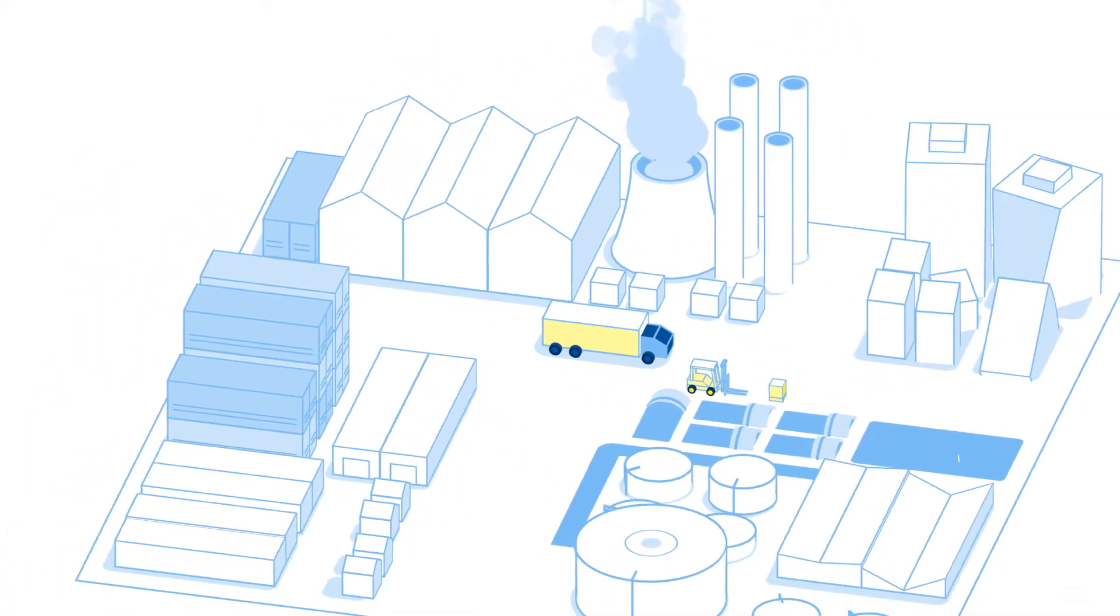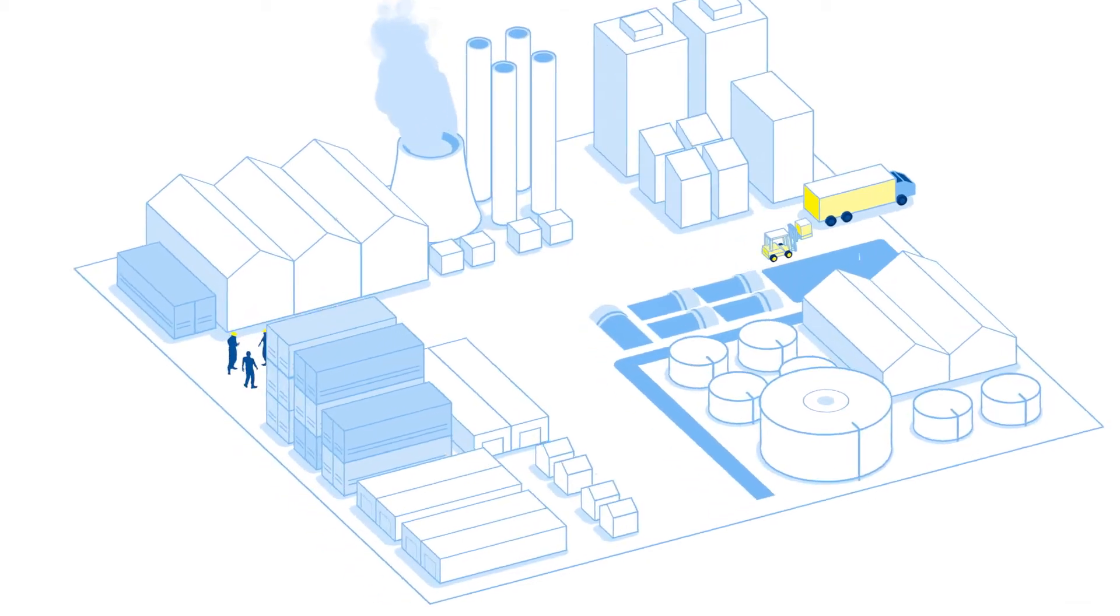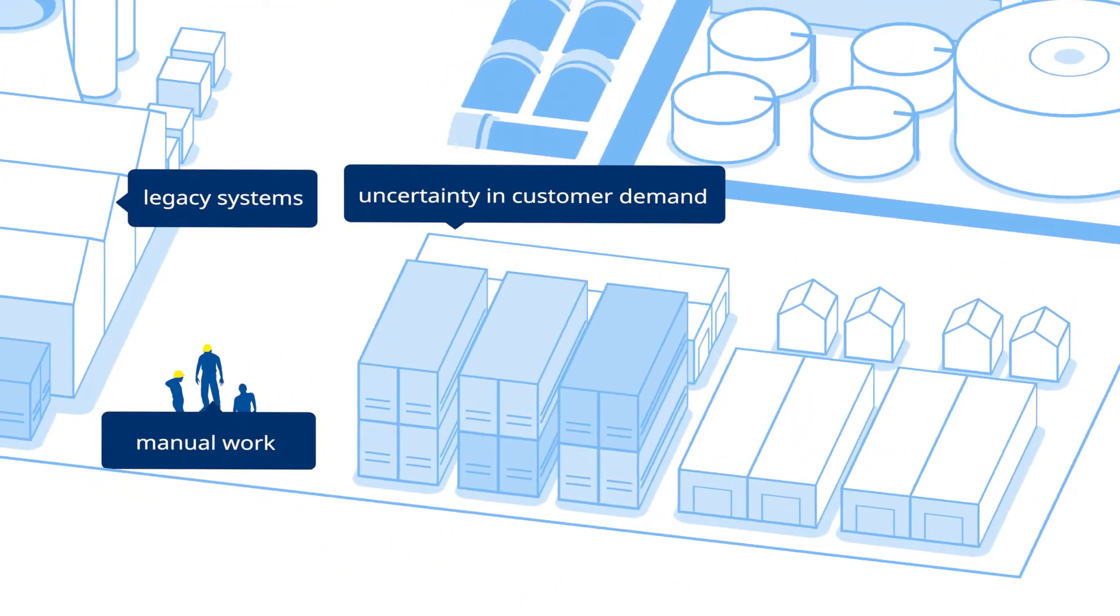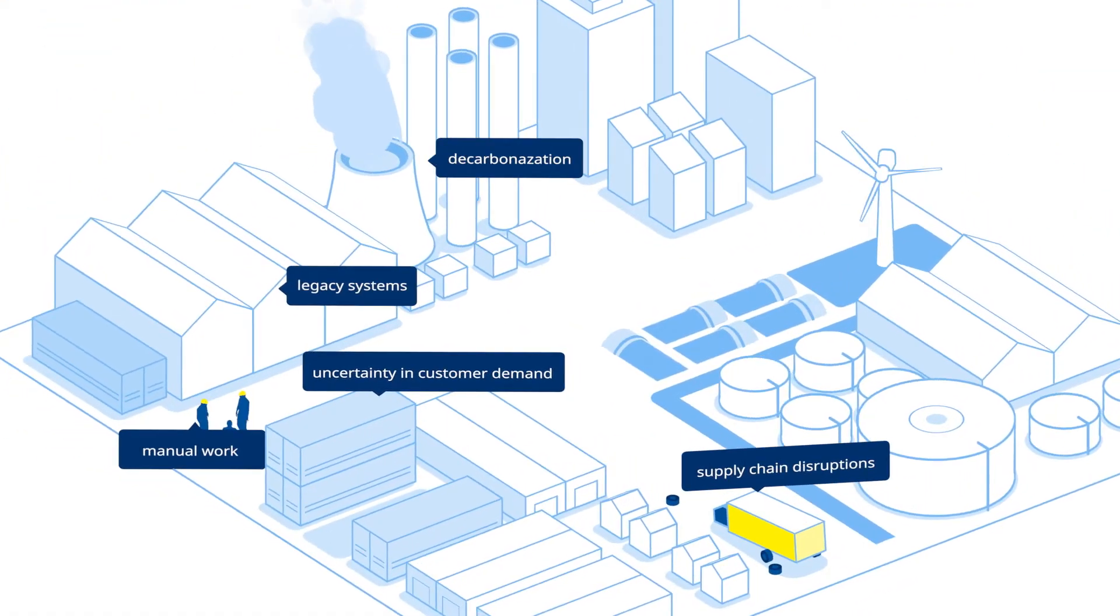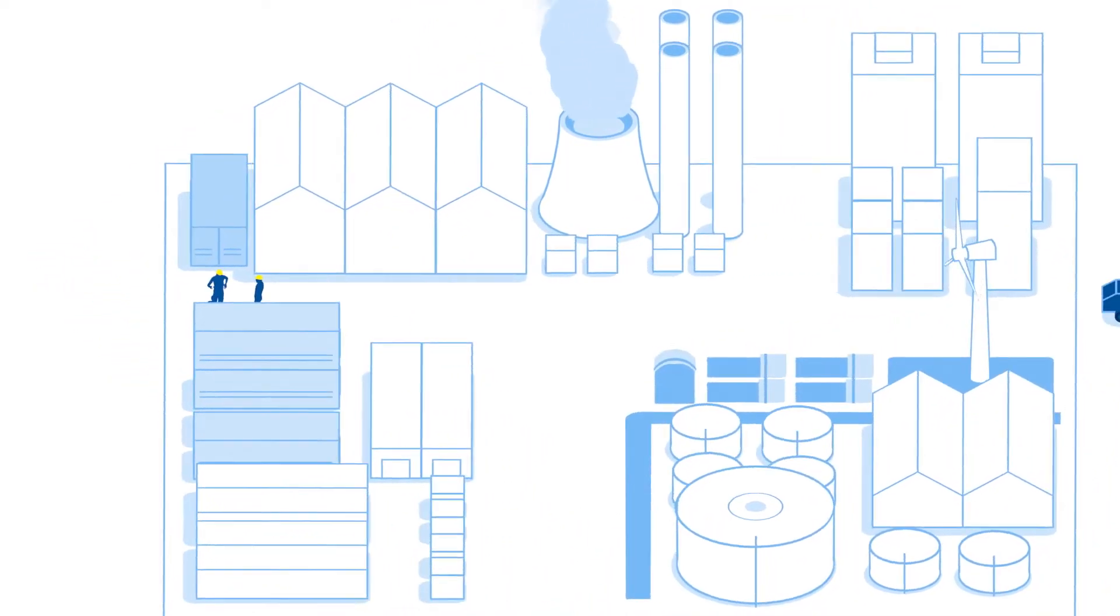In the competitive world of industrial manufacturing, every decision counts. How you deal with legacy systems, manual work, uncertainty in customer demand, supply chain disruptions, and decarbonization influences how resilient your organization is in the future. To drive efficiency, there's only one way forward: digital transformation.